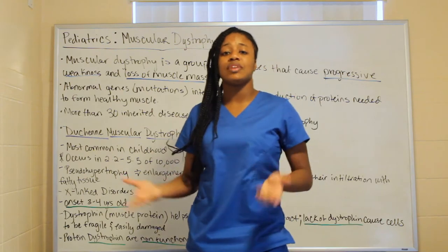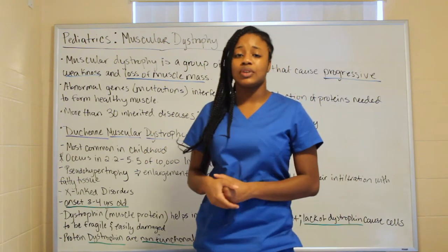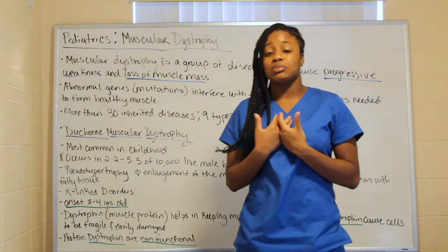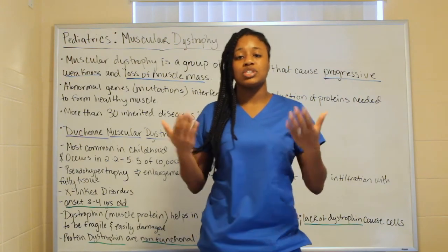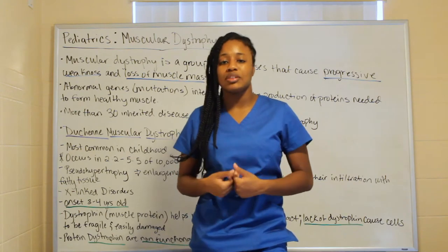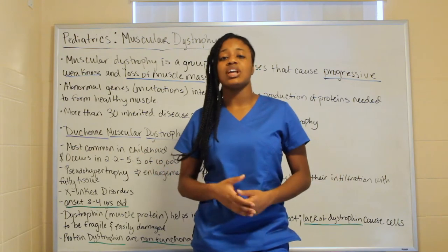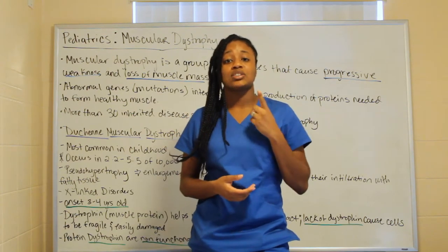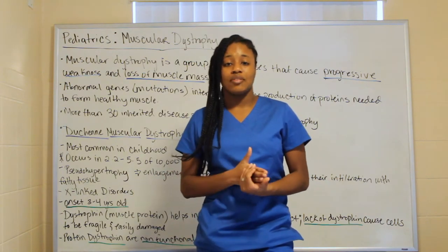If a male has muscular dystrophy, it is on the X chromosome — and he gets that X chromosome from the mother, because females only have XX. The mother gives the X, the father gives the Y, which makes the boy. So if the disorder is X-linked, it came from the mother. A male only has one X to work with, and if that X is already mutated, he will have the disorder.